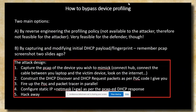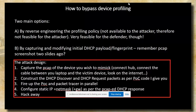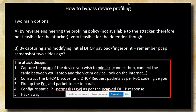How do we bypass device profiling? There are two main options. First, we reverse engineer the profiling policy, but that's not really feasible for an attacker because they would have no knowledge of what's running on the other side of the connection — they don't know what the profiler policy is, or if there is one at all. Option B is we can capture and modify the initial DHCP payload. The attack design starts by capturing a PCAP of network traffic between the device you wish to mimic and the profiler. You can do this by connecting a hub to sniff the local network segment, connecting a cable directly between your laptop and the victim device, or looking up PCAPs for specific devices on the internet.